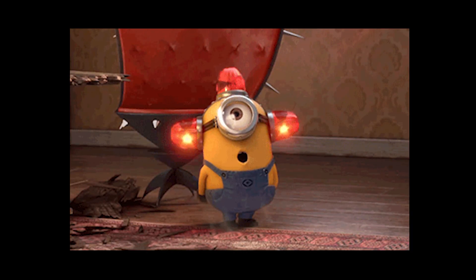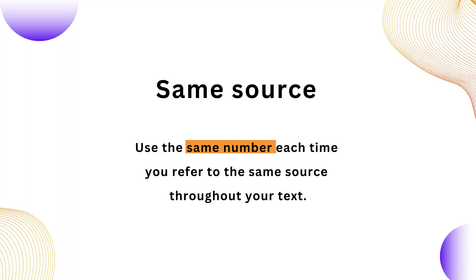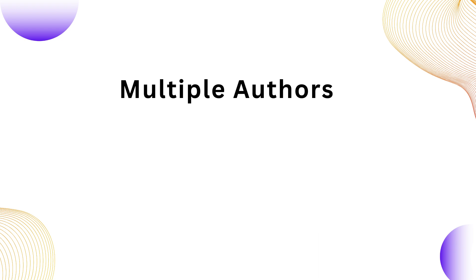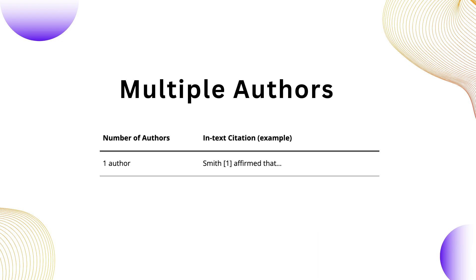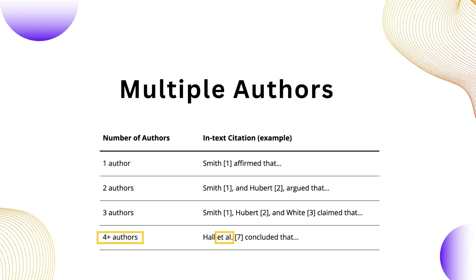There are a few points you must pay attention to when using the IAAA citation style. Use the same number each time you refer to the same source throughout your text. For multiple authors, a maximum of three authors are included in the in-text citation. If there are more than three authors, you use et al., which means 'and others'.